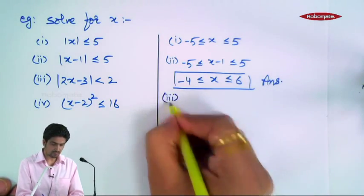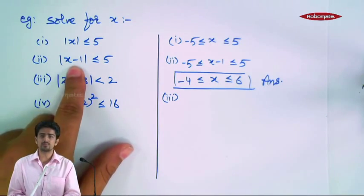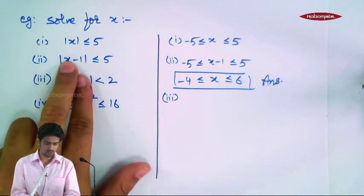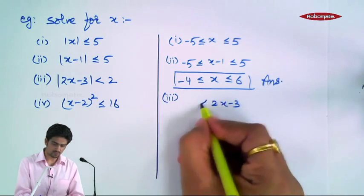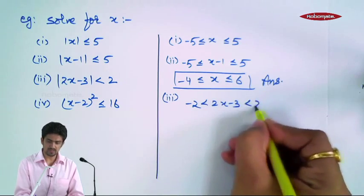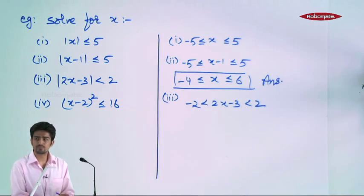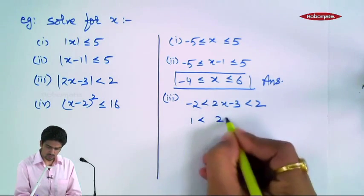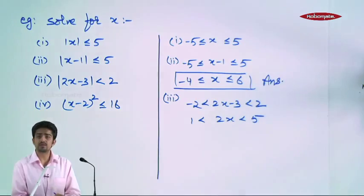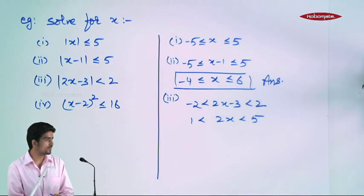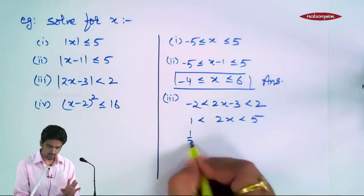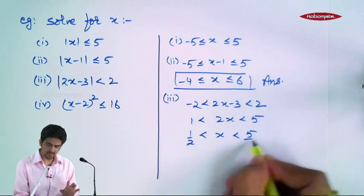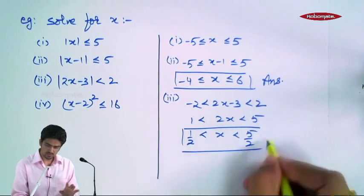Similarly, in the third part: kisi cheez ka magnitude agar less than 2 hai, to wo cheez minus 2 aur 2 ke beech mein layegi. We want x. Pahle teen add kiya — 1, 2x, 5 — then we divided by 2. Kyonki 2 positive hai, inequalities change nahin hui. So, 1/2 less than x less than 5/2. So, this is the answer.